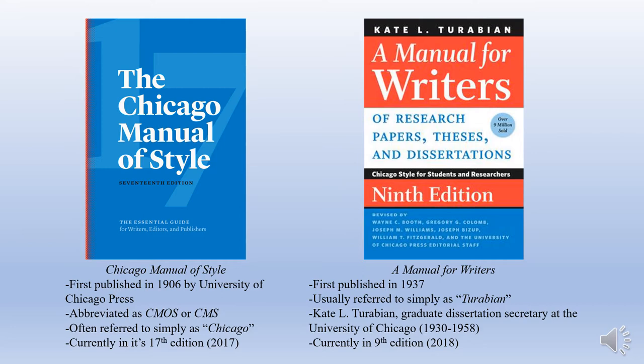Some people will ask why it's called Chicago Manual Style slash Turabian. Turabian is a simplified version of Chicago Manual Style. It was first published in 1937 and is usually just referred to as Turabian because it was written by a woman by the name of Kate Turabian. Turabian was a graduate school dissertation secretary at the University of Chicago. She served for a very long time, from 1930 to 1958.